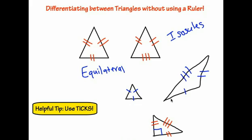Obviously, looking at the triangles I drew, these are not perfect — if we measured them with a ruler, the sides wouldn't actually be the same. But because we used these ticks, now we can show what type of triangle it is, even if it's not perfectly measured out with a ruler.